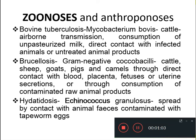The second example is brucellosis, which is caused by a gram-negative coccobacillus, and that is also transmitted from animals like cattle, sheep, goats, pigs, and camels through direct contact with blood, placenta, fetuses, or uterine secretions, or through consumption of contaminated raw animal products.